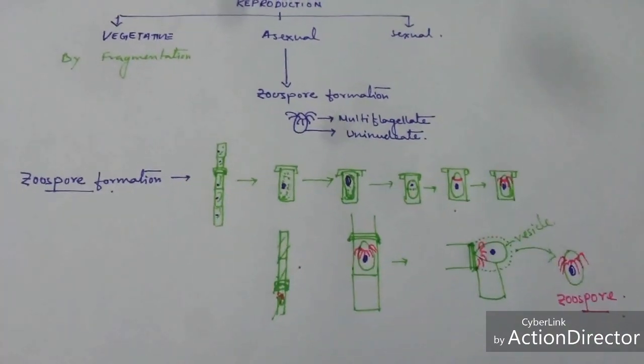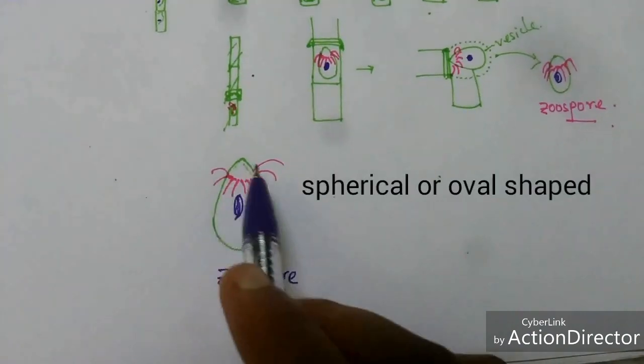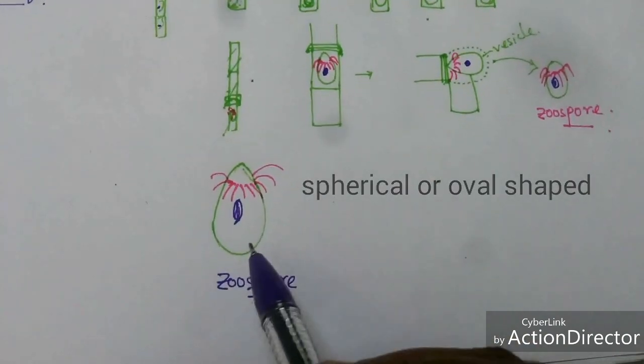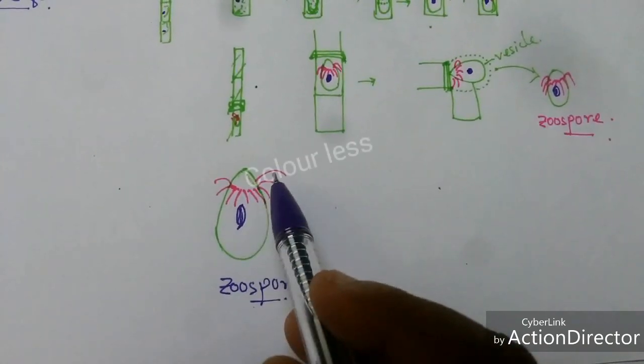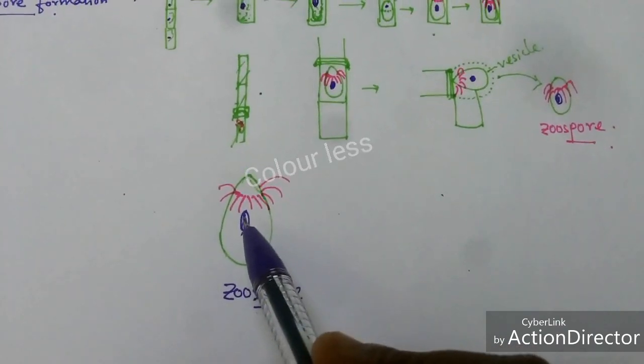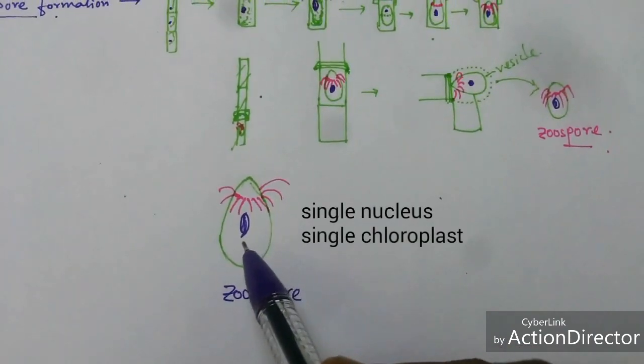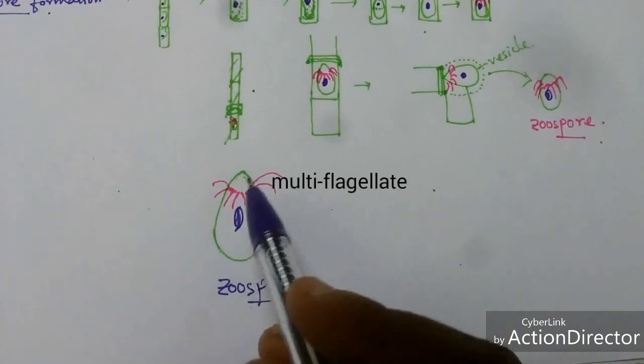Zoospores are spherical or pear-shaped, deep green in color but at the big portion colorless, and have one nucleus. They also contain one chloroplast and many flagella are present.